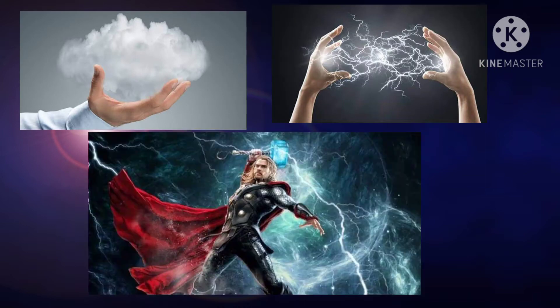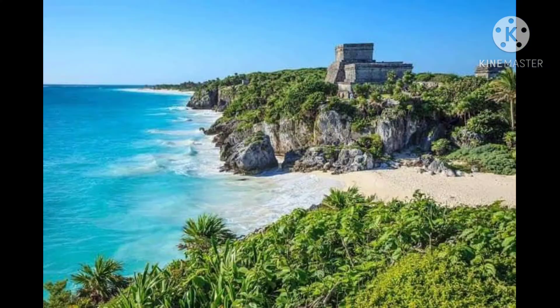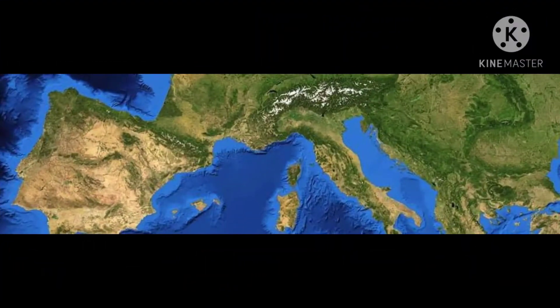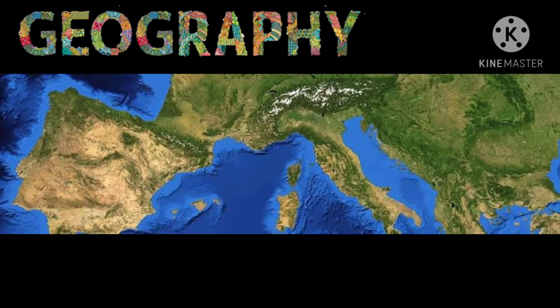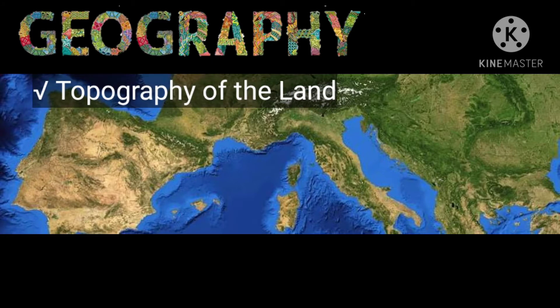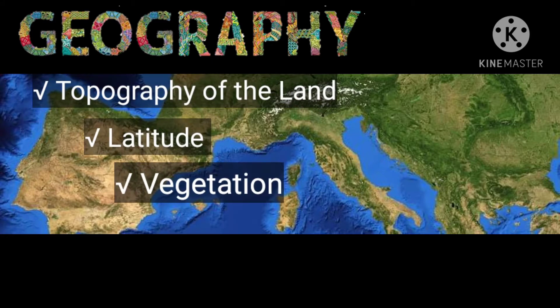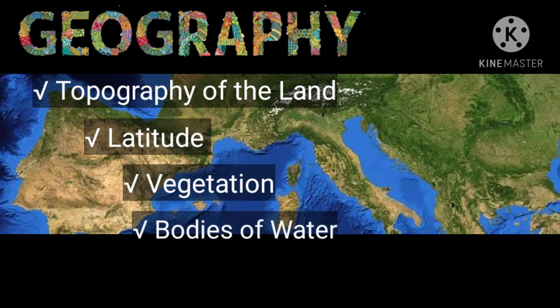On science fiction shows, people sometimes have amazing powers to affect the weather. This is impossible in real life. But in real life, there are still things that affect the weather. One thing that affects the weather is the geography of an area. This includes the topography of the land, the latitude, vegetation cover, and the proximity of bodies of water to an area.